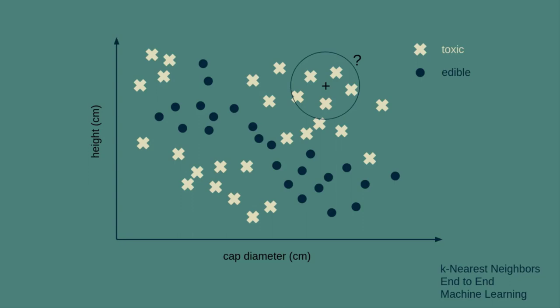When working with a two-class classification problem — toxic or edible — it's really convenient to have a K that's odd. That way, if you have two of one and three of the other, you can go with the one that has the largest number; one will always outvote the other. If you have three classes or more, there's always a possibility of a tie, so you have to handle that in some way that makes sense given your data. For now, we'll stick with a two-class classification problem and a K that's odd. So in this image, K is five. All five of those neighbors are toxic. Therefore, KNN says a mushroom located at the plus sign with that cap diameter and that height will also be toxic.